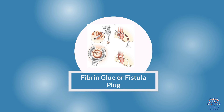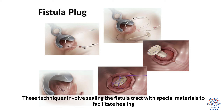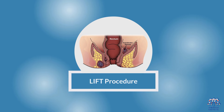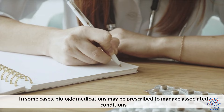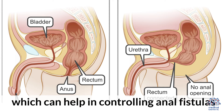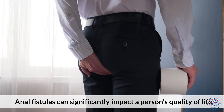3. Fibrin Glue or Fistular Plug: These techniques involve sealing the fistula tract with special materials to facilitate healing. 4. LIFT Procedure: Which involves dividing the fistula tract and preserving the anal sphincter muscles. 5. Biologics: In some cases, biologic medications may be prescribed to manage associated conditions like Crohn's disease, which can help in controlling anal fistulas.